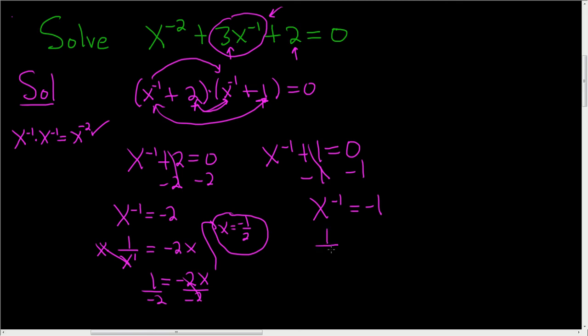And then again, write this as 1 over x. And multiply both sides by x. These cancel. So 1 is equal to negative x. And then just divide by negative 1. So x is equal to negative 1.